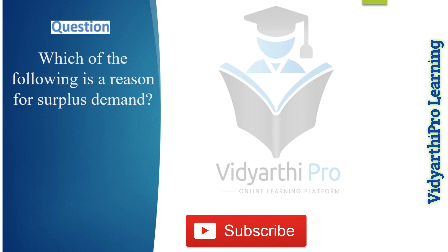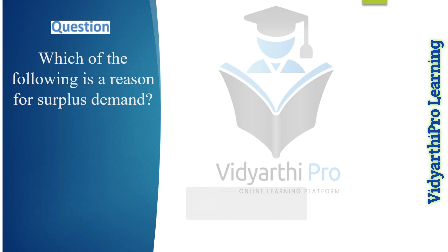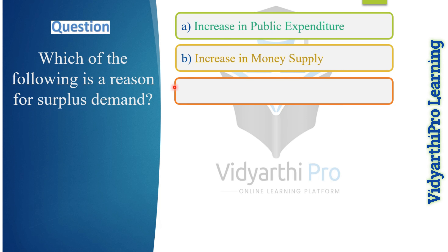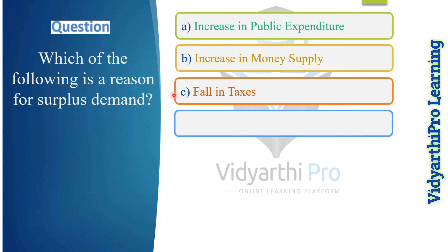Our next question: which of the following is a reason for surplus demand? Option one: increase in public expenditure. Option two: increase in money supply. Option three: fall in taxes. Option four: all of the above. The Hindi meaning is: 'Adhishesh maang ka ek karan nimn likhit mein se kaun sa hai?' The correct answer is option D, all of the above — these are all reasons for surplus demand.